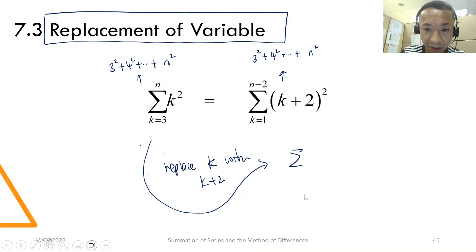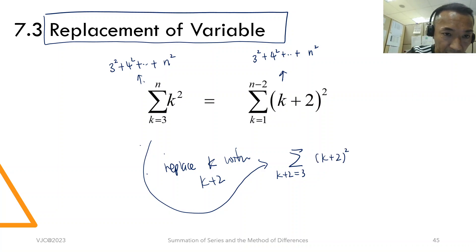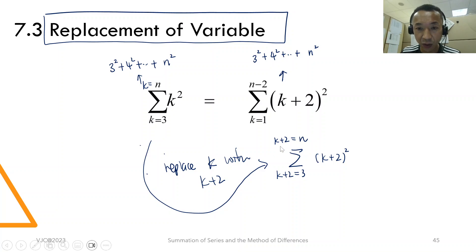So, back to this. If I replace k with k plus 2, this is k plus 2 equals to 3. That means I get, inside you get k plus 2 square. What is most important is you have to write the upper limit is also k plus 2 takes on the value n.